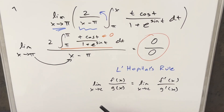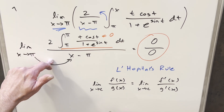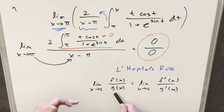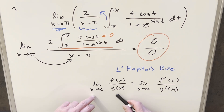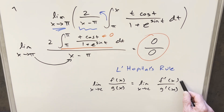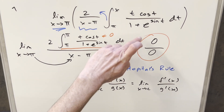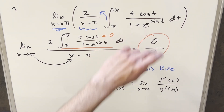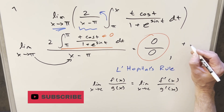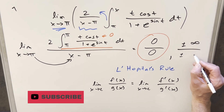L'Hôpital's rule tells us that when we have a rational expression in an indeterminate form, instead of taking the limit of the numerator divided by the denominator, we can evaluate it as the limit of the derivative of the numerator over the derivative of the denominator. Before we can use this, we need the form to be either 0 over 0, or infinity over infinity — which ours is.